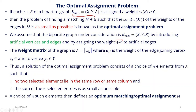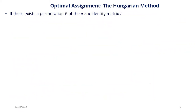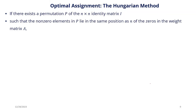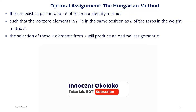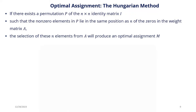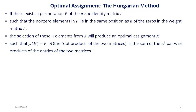The weight matrix A equals a_{ij}, where a_{ij} is the weight of the edge joining vertex x_i of the x-part to vertex y_j of the y-part of the bipartite graph. A solution to the optimal assignment problem consists of choosing n elements from A such that no two selected elements lie in the same row or column, and the sum of the n selected entries is as small as possible. A choice of n such elements defines an optimal matching M. If there exists a permutation matrix P of the n×n identity matrix such that the non-zero elements of P lie in the same positions as n of the zeros in weight matrix A, the selection forms an optimal assignment M where the sum of weights is the dot product P·A.